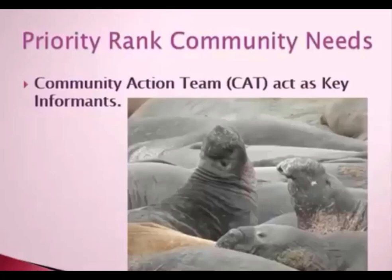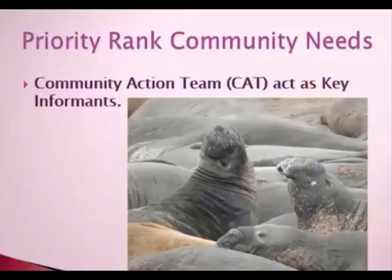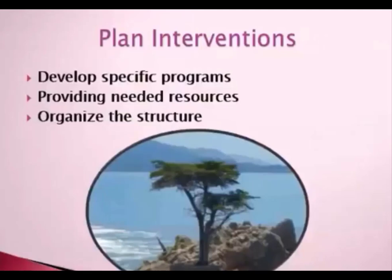Priority-rank community needs: the CAT members carefully deliberate and rank the most pressing needs first. They will recommend transformation of the community addressing the needs through the provision of resources to assist citizens to solve problems. This may include different kinds of services and economic resources to meet citizens' needs. Next would be the planning of interventions: develop specific programs, provide needed resources, and organize the structures so there is a protocol for people to follow to know where to go, when, and to whom.